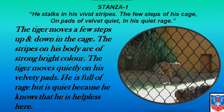Stanza one: 'He stalks in his vivid stripes the few steps of his cage, on pads of velvet quiet, in his quiet rage.' The tiger moves a few steps up and down in the cage. The stripes on his body are of strong, bright color. The tiger moves quietly on his velvety pads — all cat families have a velvety pad at the bottom of their feet. He is full of rage and anger but is quiet because he knows he is helpless here.